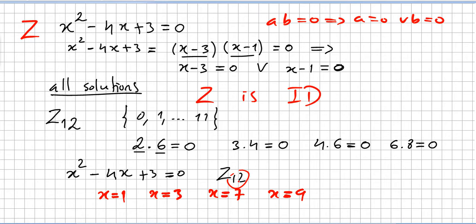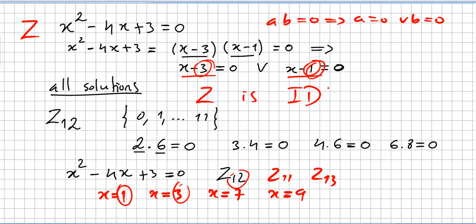We got the same solutions 3 and 1 as before — and if we did this over Z11 or Z13 those two would always be solutions too. The reason this works cleanly for those kinds of rings is that they are integral domains. Integral domains are very important and particular rings, and I'm going to show now a table with some of their nice characteristics.